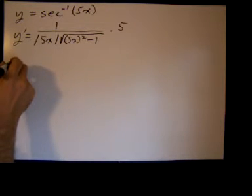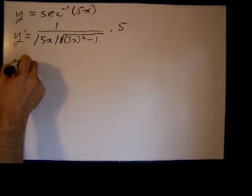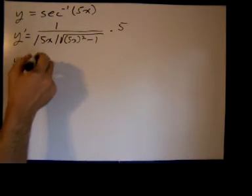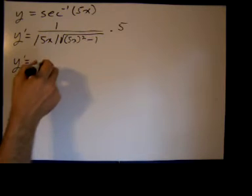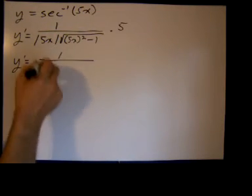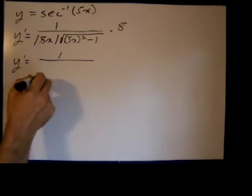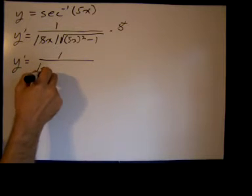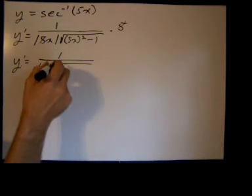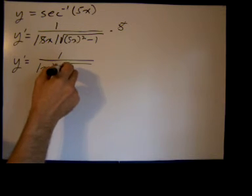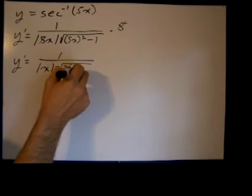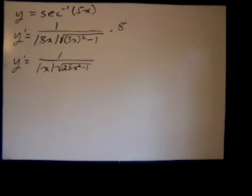So we could just clean that up a little bit. And y prime, the absolute value of positive 5 is 5, so we could actually just cancel those out. And we get 1 over the absolute value of x times the square root of 25x squared minus 1. And that's it.